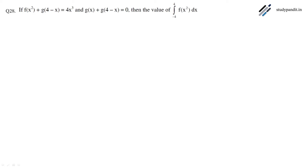In this question we have f(x²) + g(4 - x) = 4x³, and g(x) + g(4 - x) = 0. Then we have to find the value of the integral from -4 to 4 of f(x²) dx.